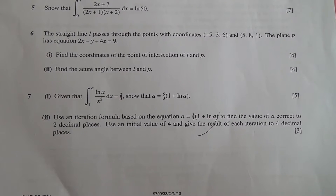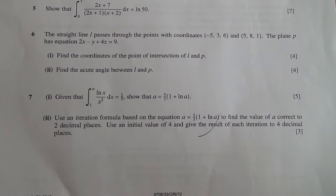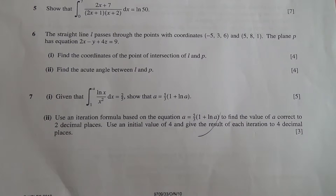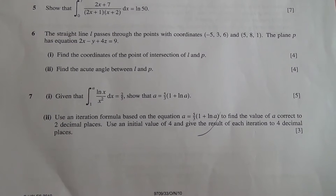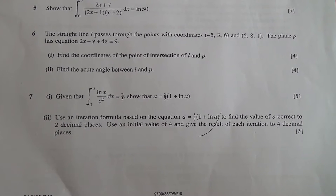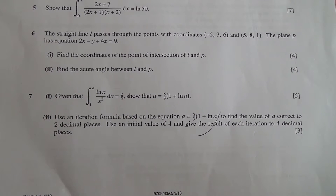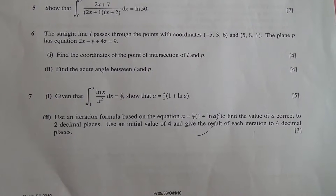Question number 7. Given that the integral of ln(x) over x squared dx is equal to 2 fifths, with limits from 1 to a, show that a is equal to 5 over 3 times 1 plus ln a.